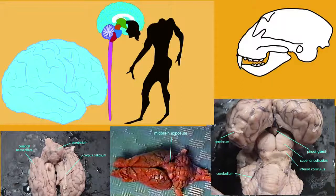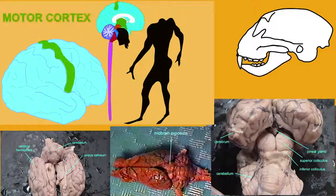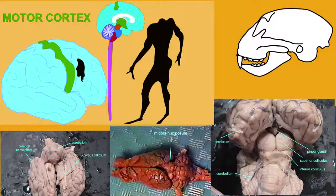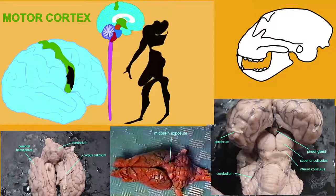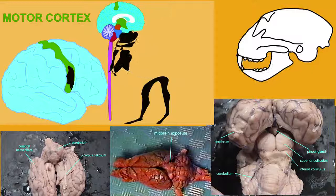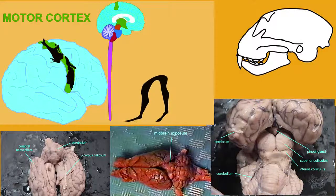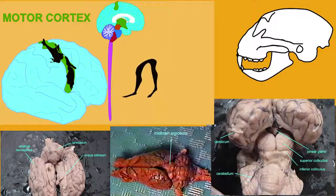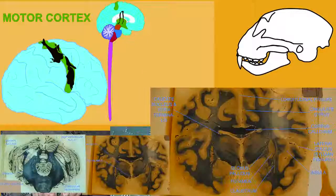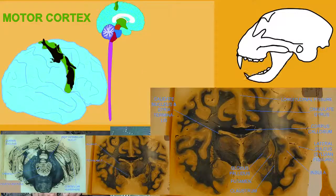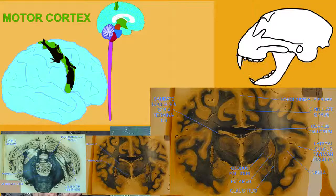Many areas of the brain are shared among eutherians so that they do similar processing in similar areas. Eutherians increased the ability to manage fine-skilled movements. Eutherians moved the hippocampus, and eutherians share a number of folds in the cerebrum.